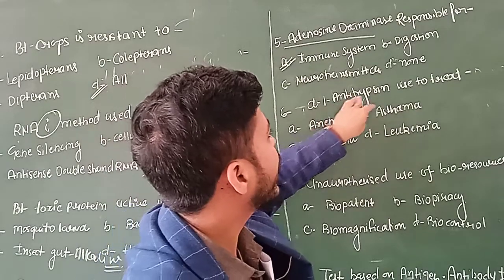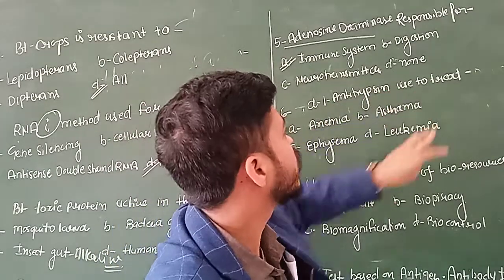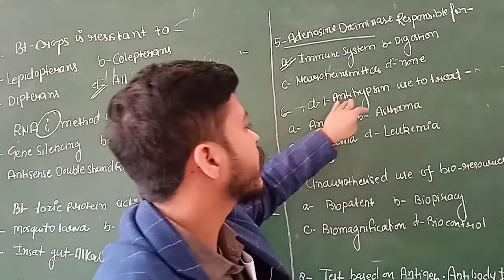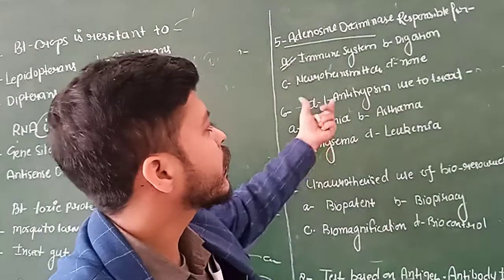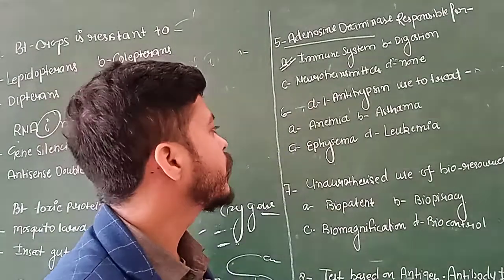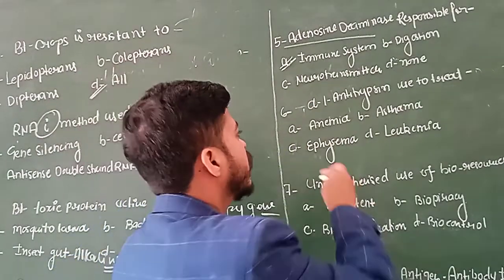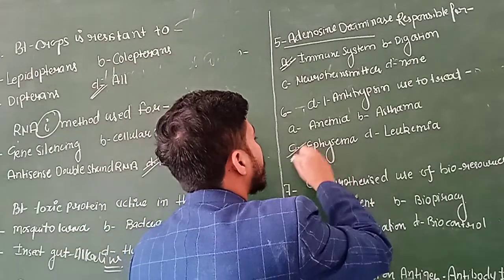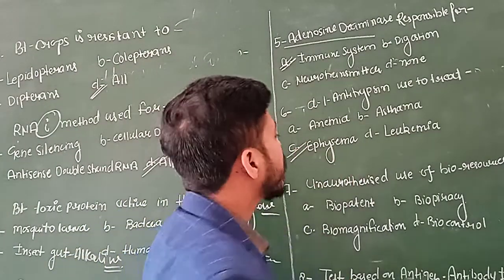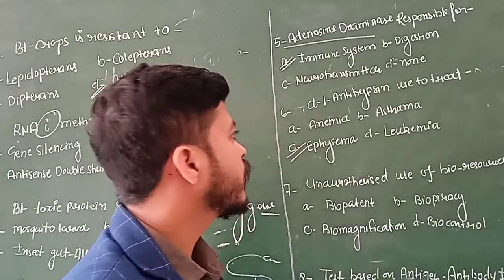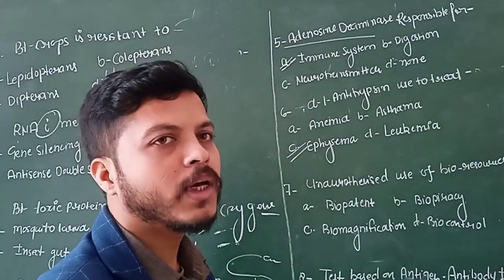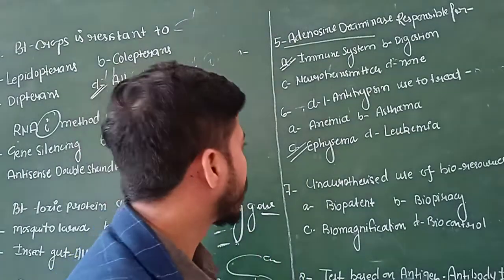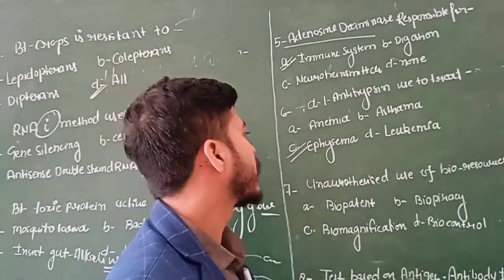Alpha-1 antitrypsin is also produced using recombinant DNA technology. It is used to treat emphysema, which is a disease in which lung cells are damaged due to excess smoking.